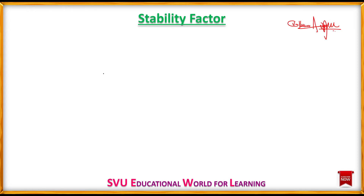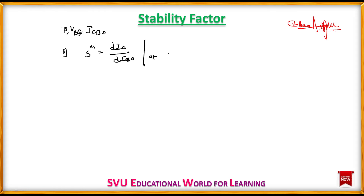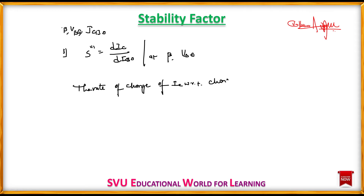Now we will show you the third definition. The third definition is the rate of change of collector current with respect to change in ICBO.